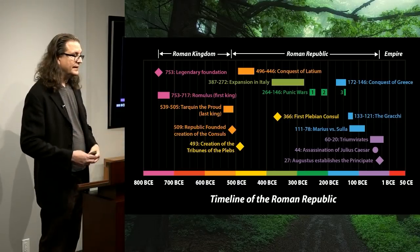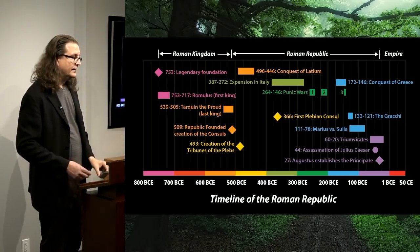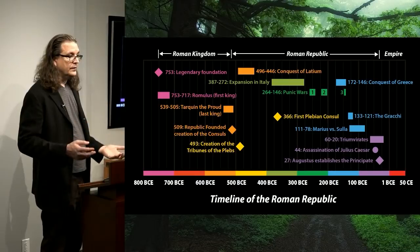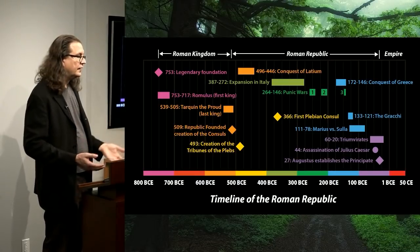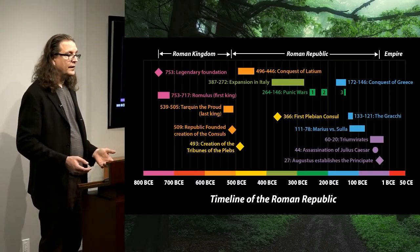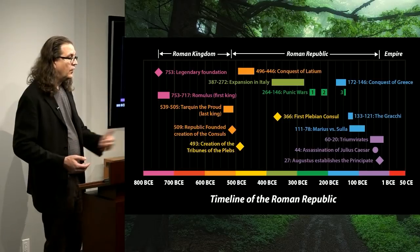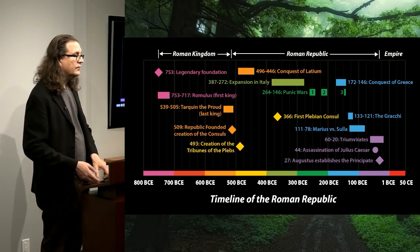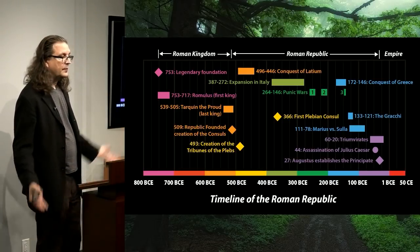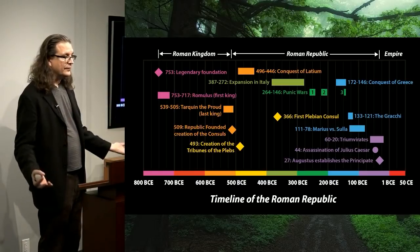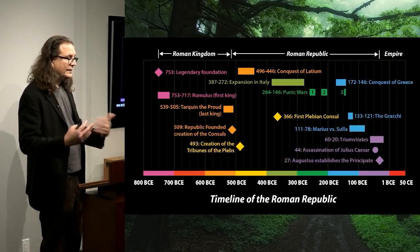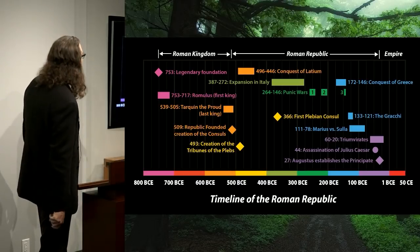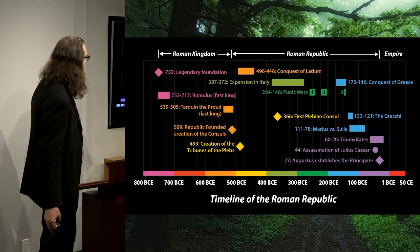The Roman Republic doesn't have one static Constitution throughout — nor is it a written constitution like the US Constitution. Rather they have positions, customs, laws, and especially traditions that evolve over the course of the Republic. We're just going to look at it as it reaches its apex so we can see how it all fits together.